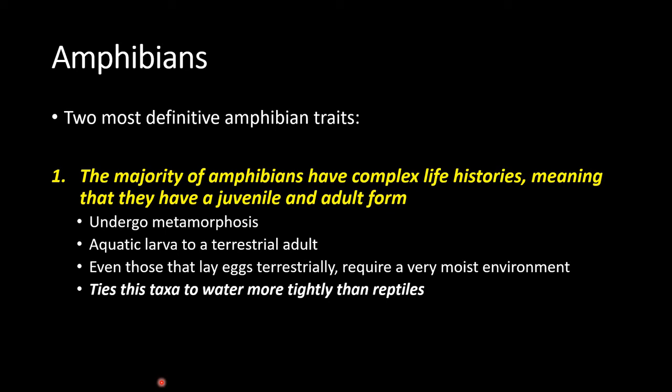The first is that the majority of amphibians have a complex life history — they have a juvenile or larval stage and an adult stage. The juveniles undergo metamorphosis, with a big change between what they look like as a baby and as an adult. Generally, amphibians start as eggs laid in water, hatch into tadpoles or aquatic larvae that are typically herbivorous, then undergo metamorphosis — gaining legs, losing their tail — and become terrestrial carnivorous adults. This ties amphibians more closely to water than reptiles; they need water bodies to reproduce.